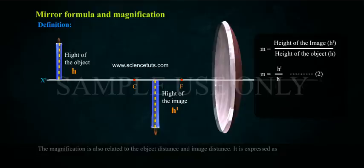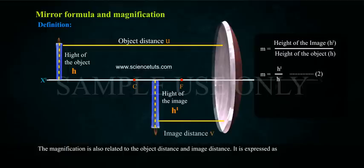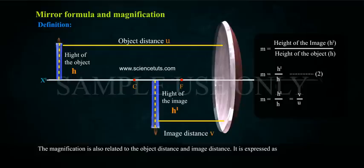The magnification is also related to the object distance and image distance. It is expressed as: magnification M = H'/H = -V/U.